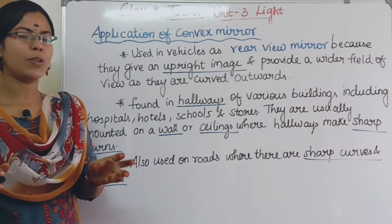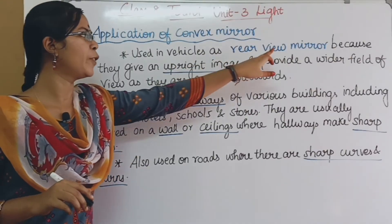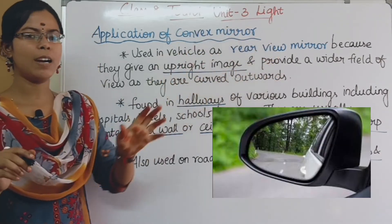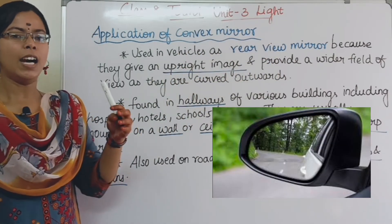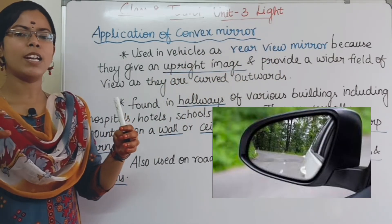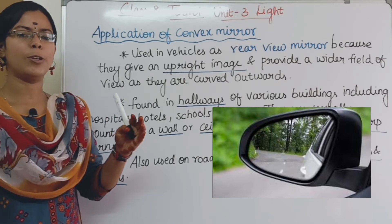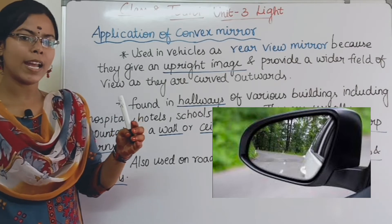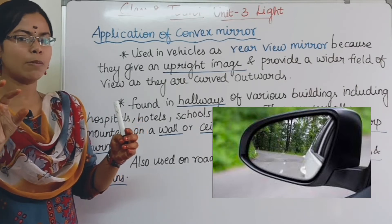Now for convex mirrors: convex mirrors are used as rear view mirrors in vehicles. Because when we look in the mirror, it gives a wider field of view behind us.